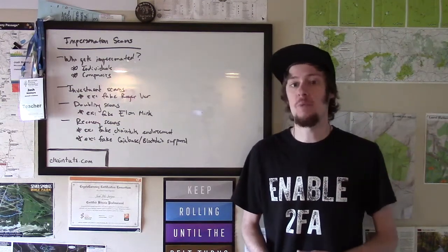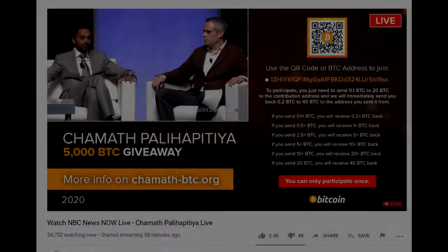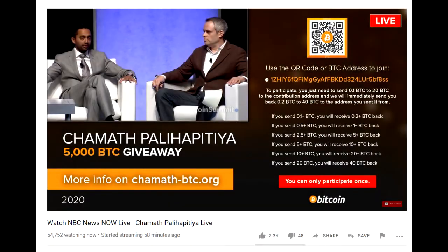This type of scam works by saying oh if you send me 0.5 Bitcoin I will send you one Bitcoin back. It's the promise of a double return by simply sending them some Bitcoin to verify your address.